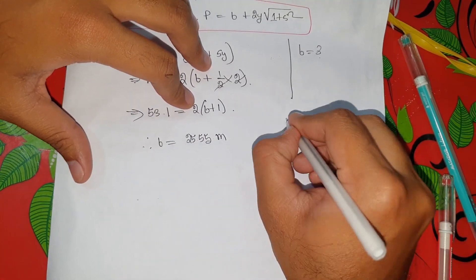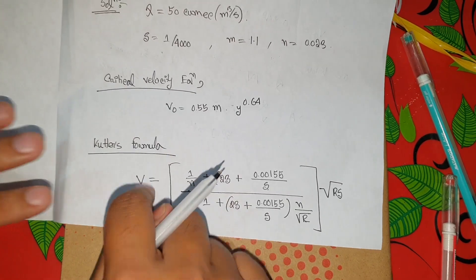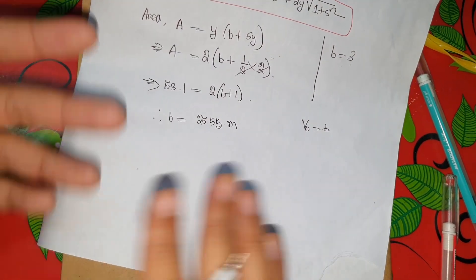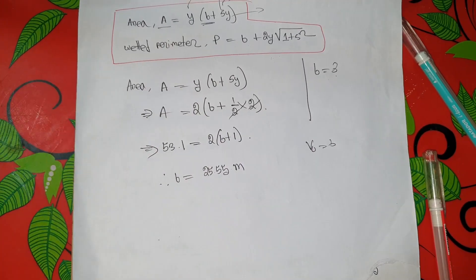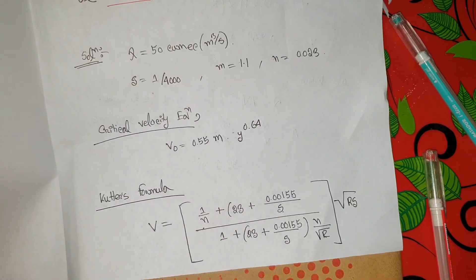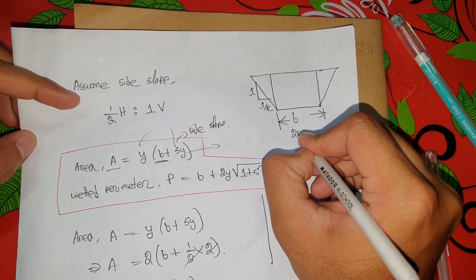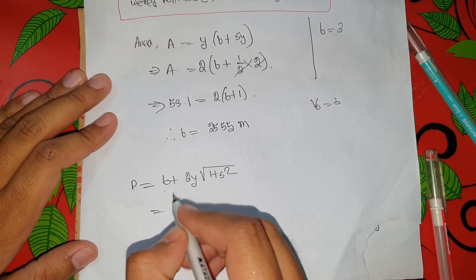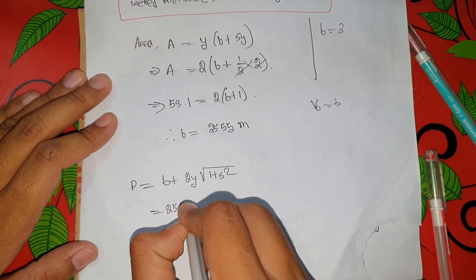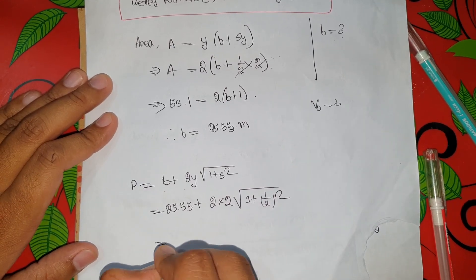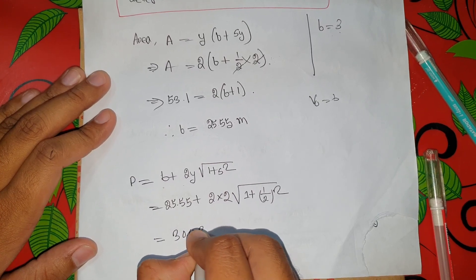We check that VT equals V naught. We try y equal to 2.5. Going to the wetted perimeter: P equals B plus 2Y times root of 1 plus 1.5 squared, which gives P equal to 30.03 meters. Then R equals A by P equals 53.1 divided by 30.03, which equals 1.71.